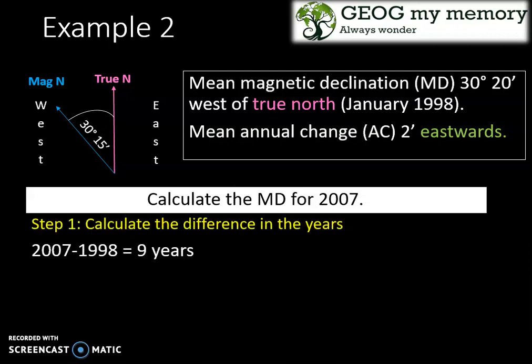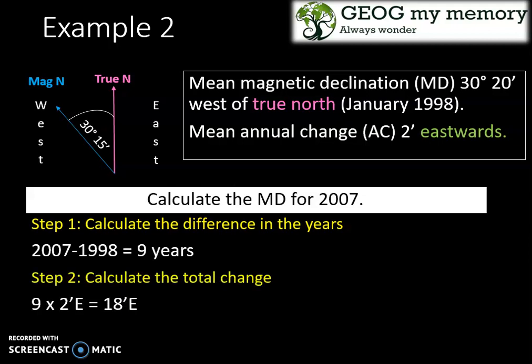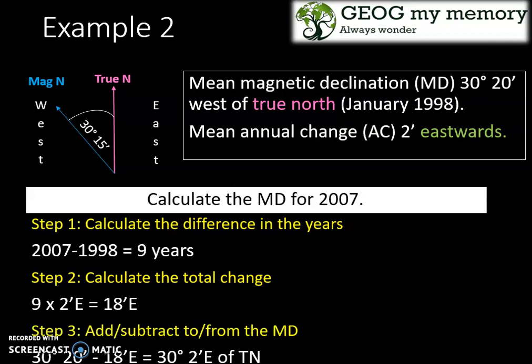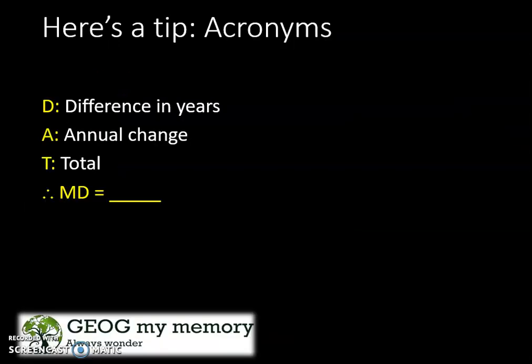Step 1: 2007 minus 1998 gives 9 years. Step 2: 9 years multiplied by 2 minutes east gives 18 minutes east. Step 3: 30 degrees 20 minutes minus 18 minutes gives 30 degrees 2 minutes west of true north.